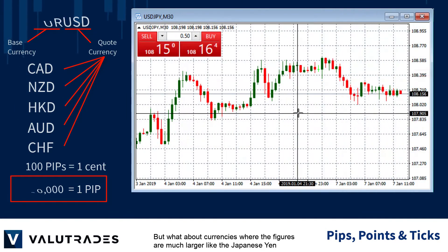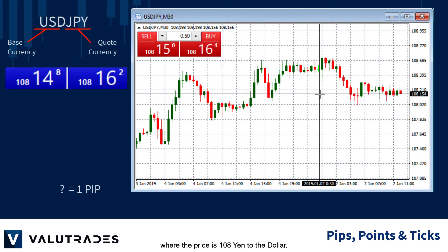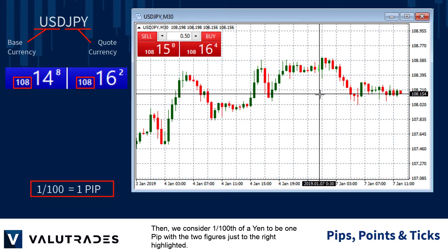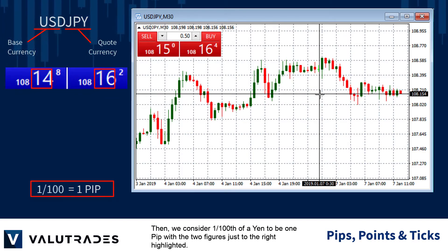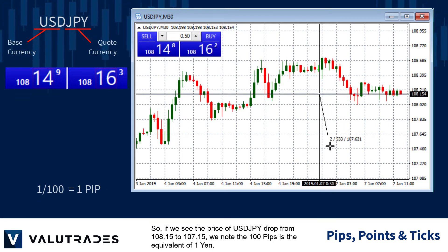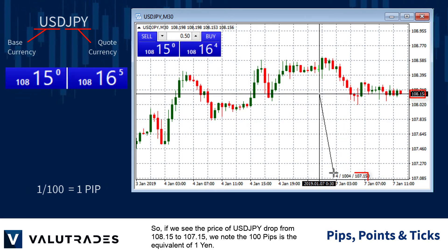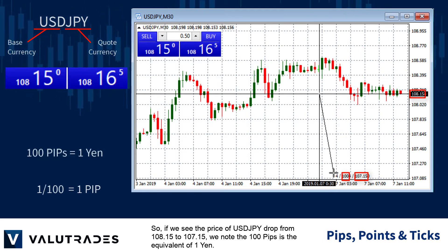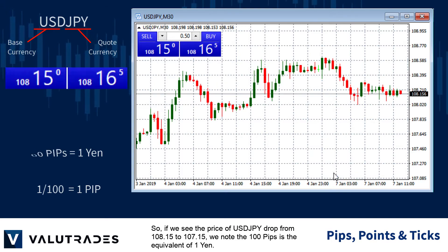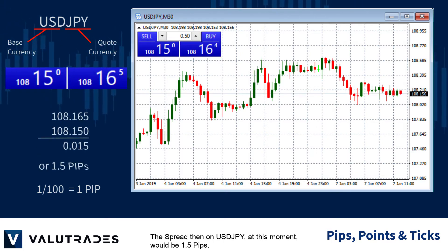But what about currencies where the figures are much larger, like the Japanese yen where the price is 108 yen to the dollar? Then we consider 1 one-hundredth of a yen to be one pip, with the two figures just to the right highlighted. So, if we see the price of dollar yen drop from 108.15 to 107.15, we note that 100 pips is the equivalent of 1 yen. The spread on dollar yen at this moment would be 1.5 pips.